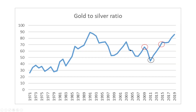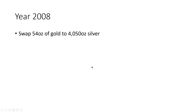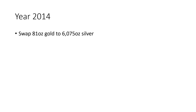With three more swap points to go: in 2008, we swapped our 54 ounces of gold to silver at the 75 ratio — 54 times 75 equals 4,050 ounces of silver. In 2011, we swapped back to gold at 1-to-50 — 4,050 divided by 50 equals 81 ounces of gold. Then in 2014, silver got cheap again and we swapped our 81 ounces of gold to 6,075 ounces of silver.